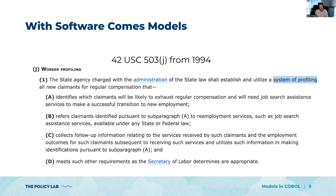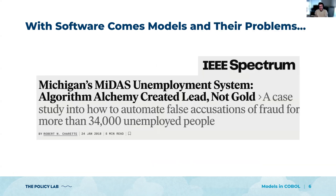Of course, like all models, they have problems. For instance, Michigan's fraud detection algorithm has recently been under a lot of fire for having a really high false positive rate compared to what you'd hope for. These are things that need to be monitored. Just like we all know, you put your MLOps infrastructure on top of it — you're constantly monitoring, looking for all your metrics, all your dashboards.